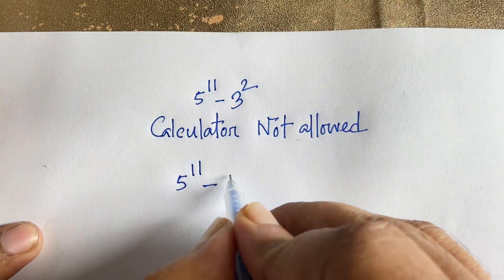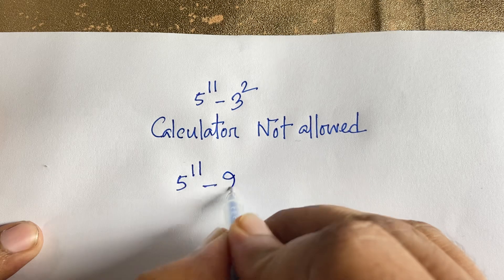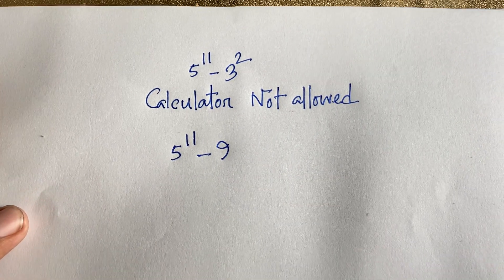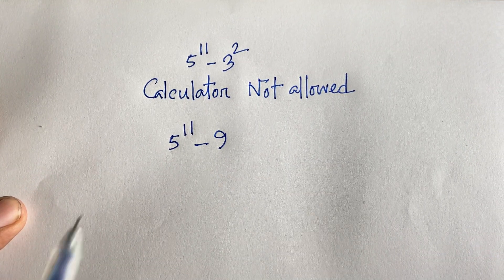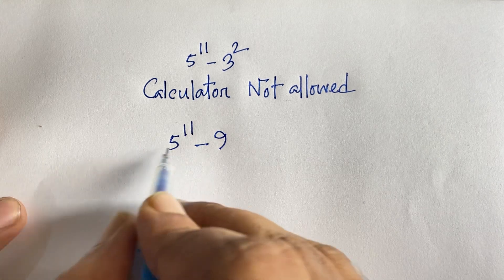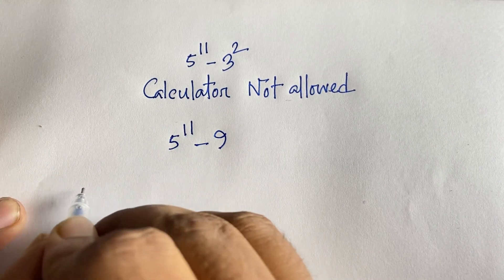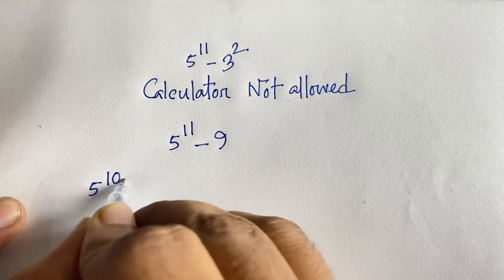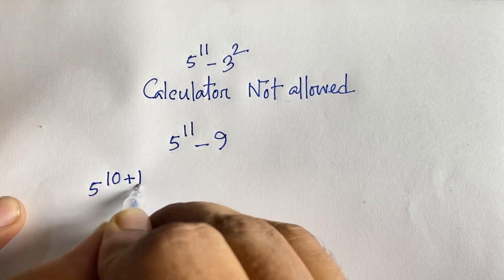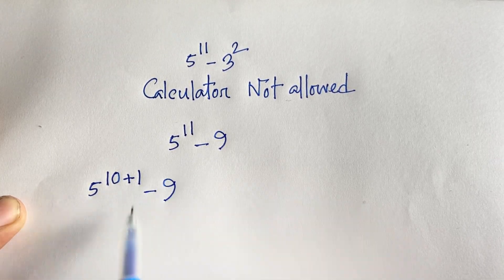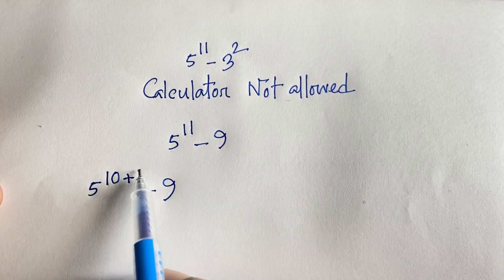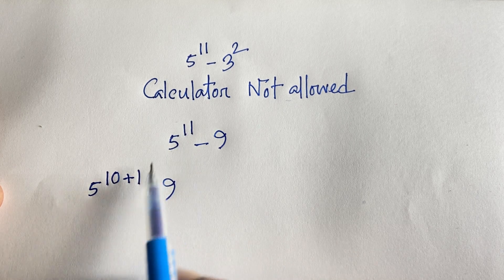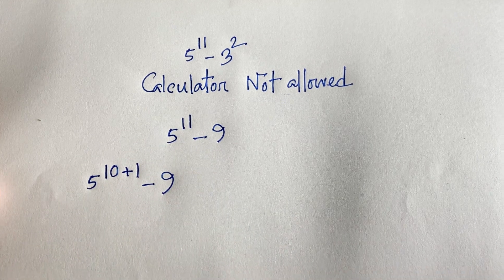I can see that 3 to the power 2 will be 9. And at this moment I can say 5 to the power 11 — I will write it as 5 to the power 10 plus 1, minus 9. Look, 10 plus 1 equals 11, so I can apply the exponential rules.